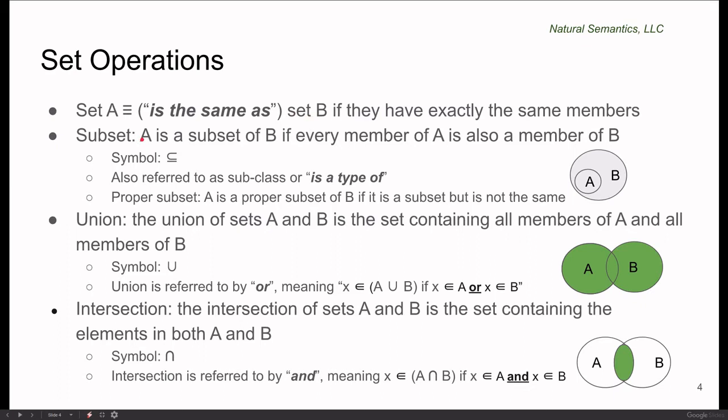Subset: A is a subset of B if every member of A is also a member of B. The symbol for subset is a U on its side, capital U on its side with an underline. In terms of Venn diagrams, A is a subset of B if the figure representing A is entirely inside of the figure representing B. In our controlled English, we will refer to subclass using is a type of.